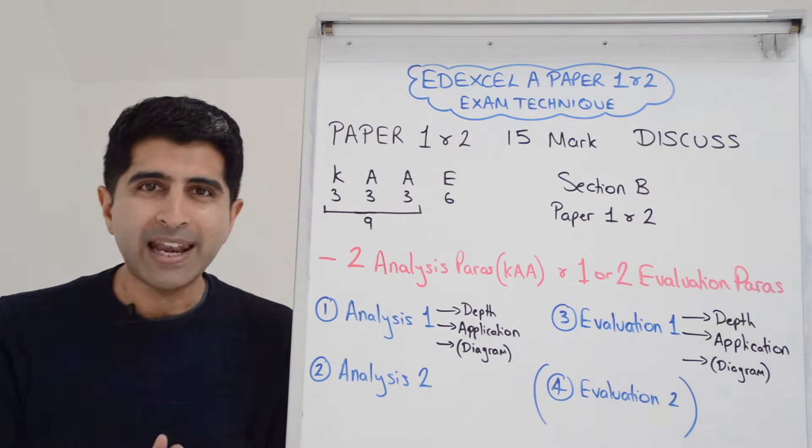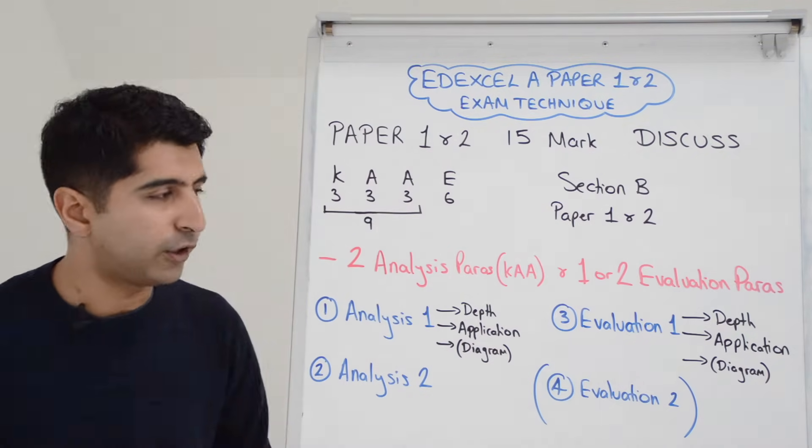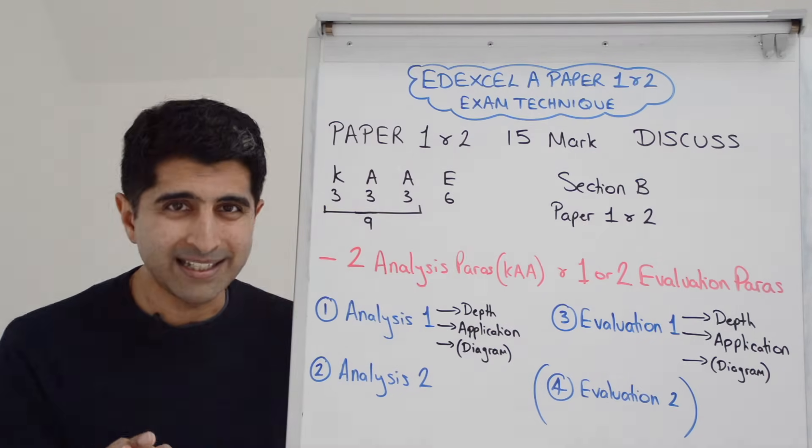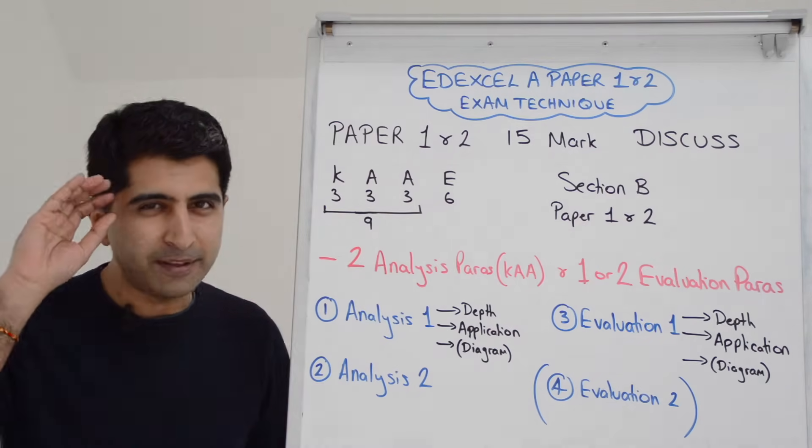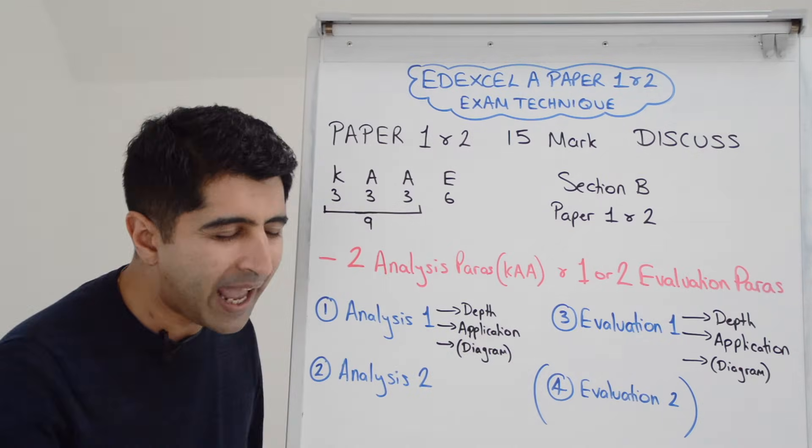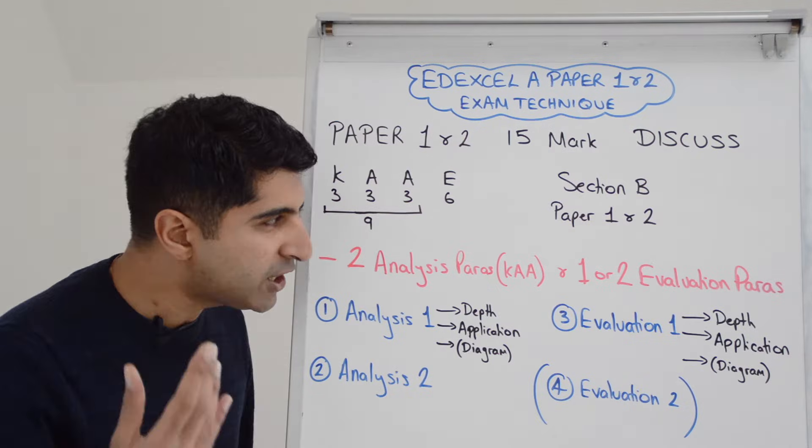So I recommend two analysis paragraphs will be great. That's two KAA points if you like to look at it that way. Two KAA paragraphs, two analysis paragraphs written in detail. And then, this is where you need to be savvy. It's one or two evaluation paragraphs. Again, it's not the number of points you make, it's the depth of writing.